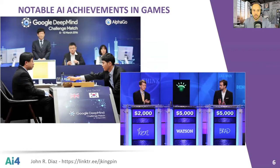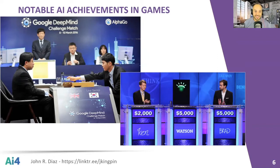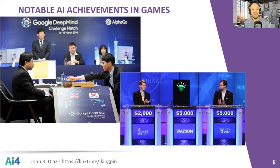When you think about AI and games, I'm curious what comes to mind. Is it perhaps Alphabet's DeepMind AlphaGo, teaching itself Go and becoming the first computer program to defeat a Go world champion, Lee Sedol, in South Korea back in March of 2016? Or is it perhaps IBM's Watson, showing the world the seeds of natural language processing, winning first place — a million dollars — on Jeopardy in 2011, beating Brad Rutter and Ken Jennings?